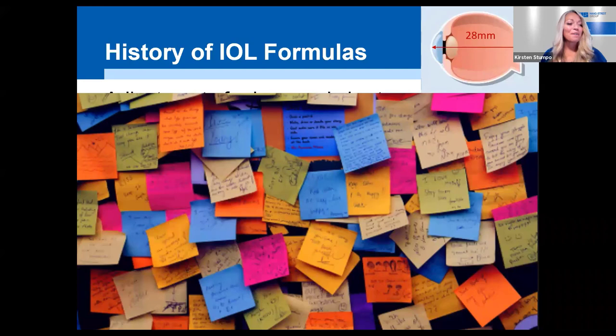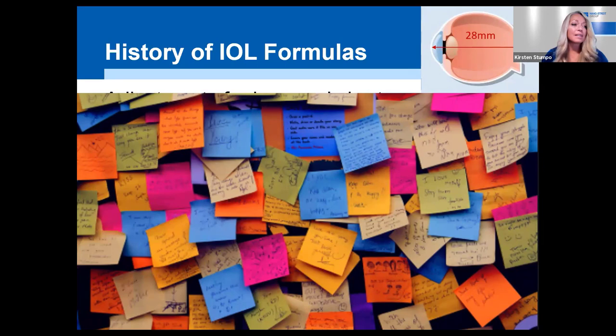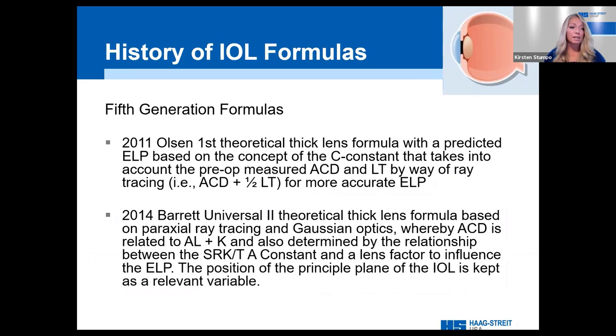I'm sure it helped the success of Arthur Fry — the guy who invented Post-it notes — because that's how we've kept track of all of these scenarios: if this, then do that, and if that, then do this. Ten years into the millennium, Olsen brought us the first theoretical thick lens formula with the concept of a C constant, also based on multiple characteristics of the implant lens and ray tracing.